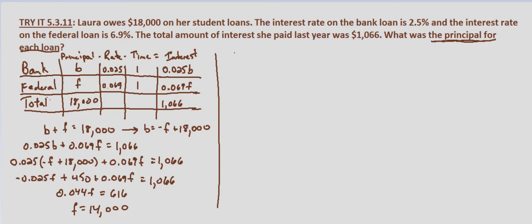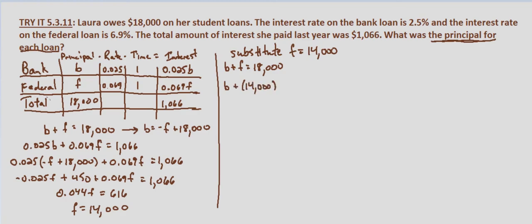As always, the next step is to substitute what we solved for — F equals 14,000 — back into our first equation. So B plus F equals 18,000 means B plus 14,000 equals 18,000. Subtracting 14,000 from both sides, we get B equals 4,000.